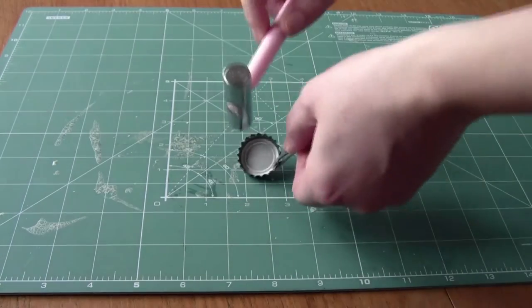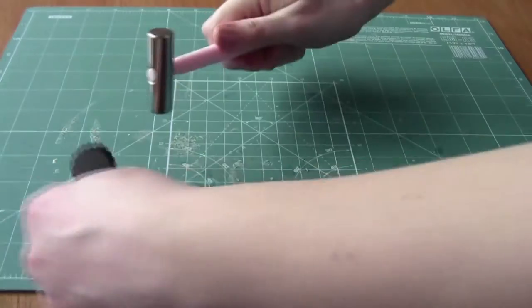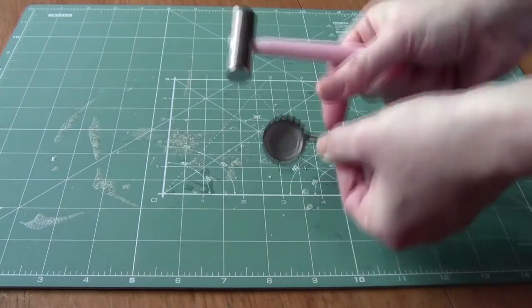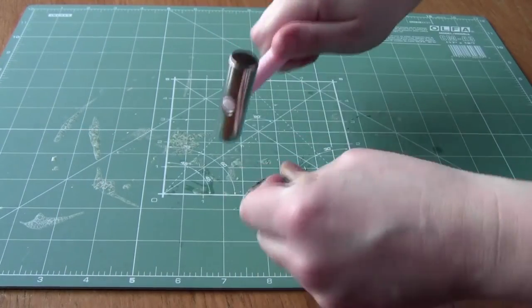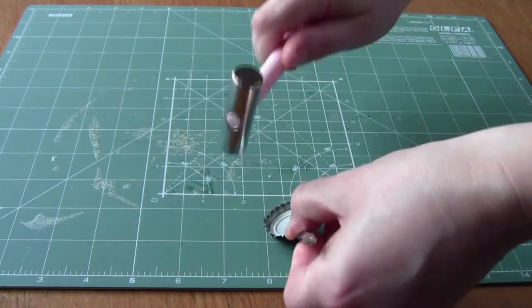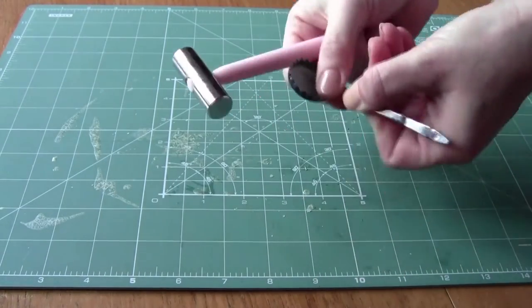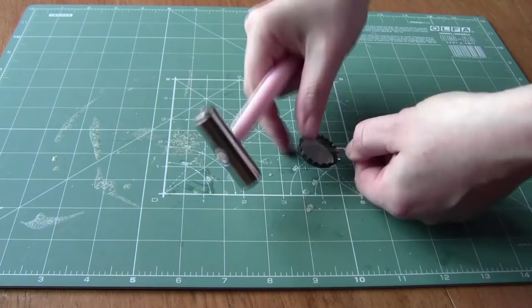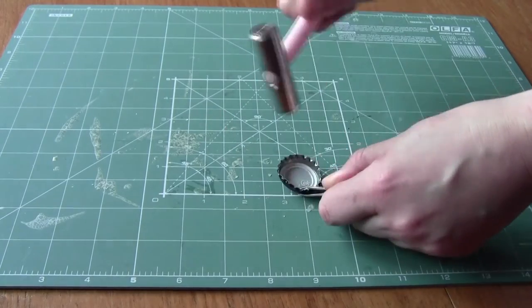To start with you need to flatten out your bottle cap. If you're doing this by hand, the easiest way is to use a small craft hammer for the first stage to start to push the outside edges of the bottle cap so that they fan outwards rather than sitting square.